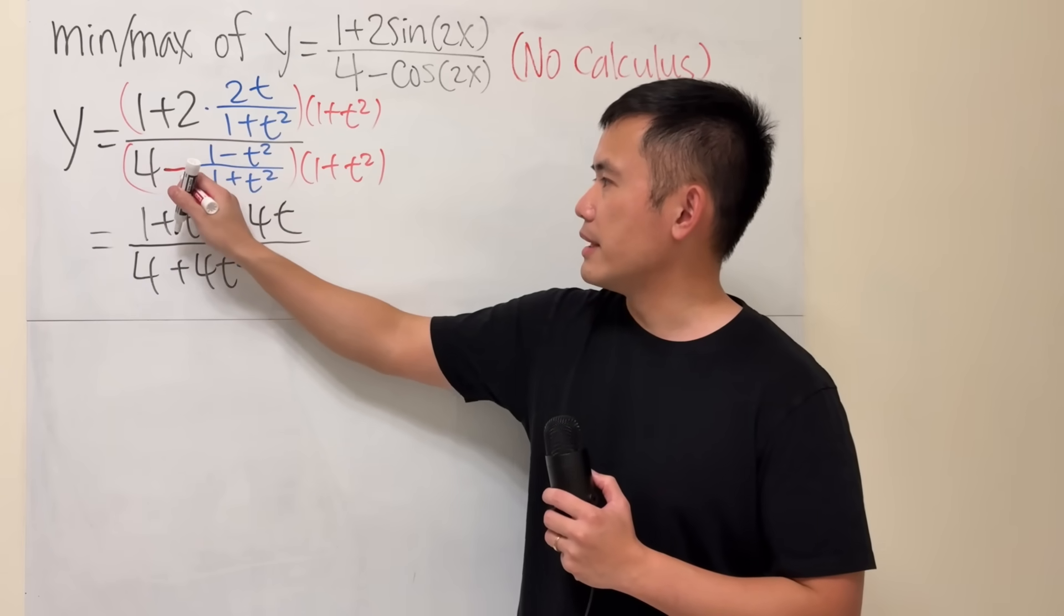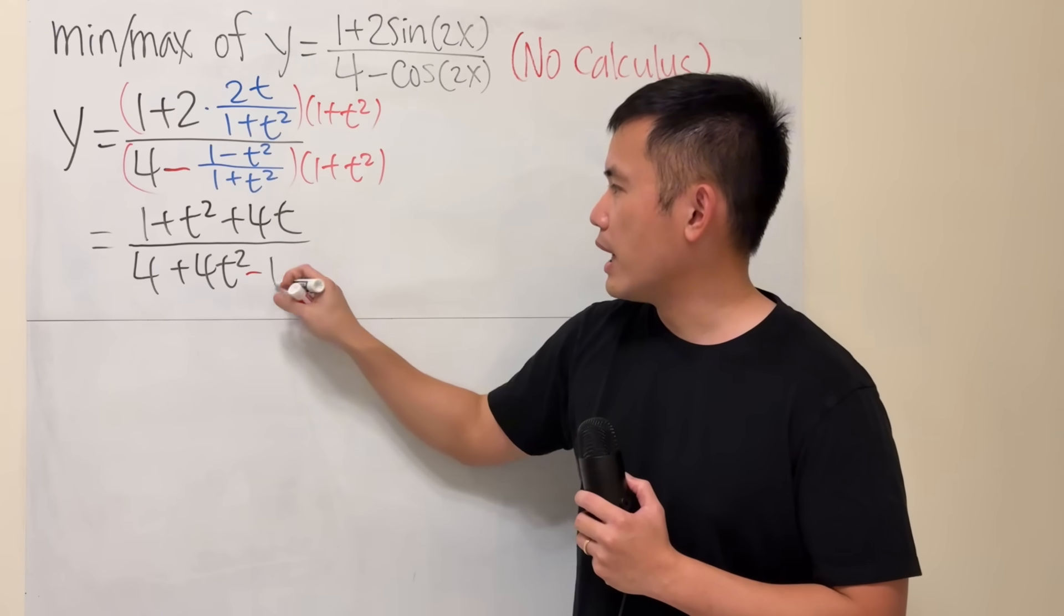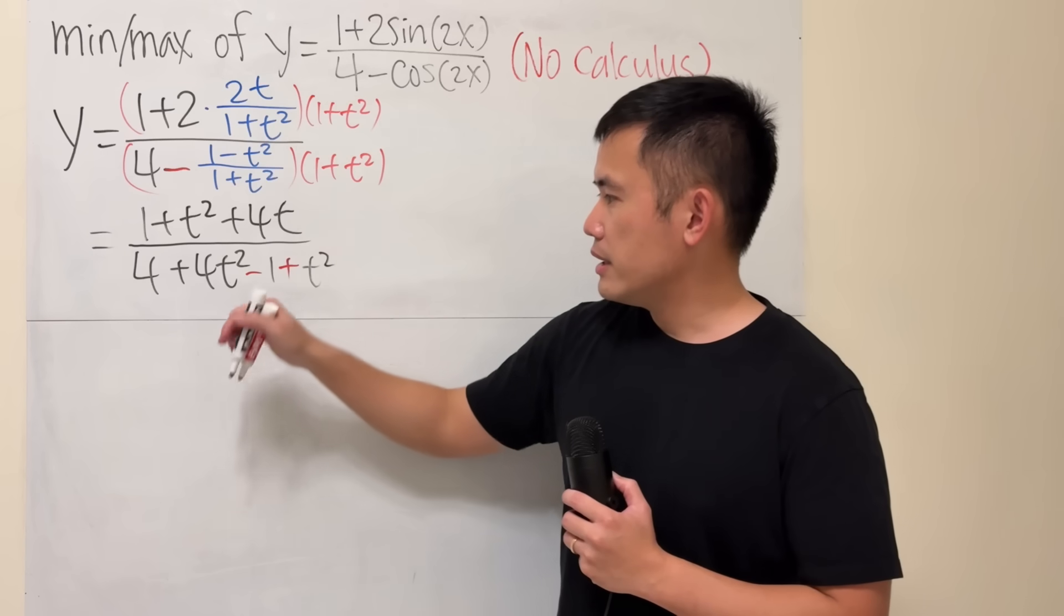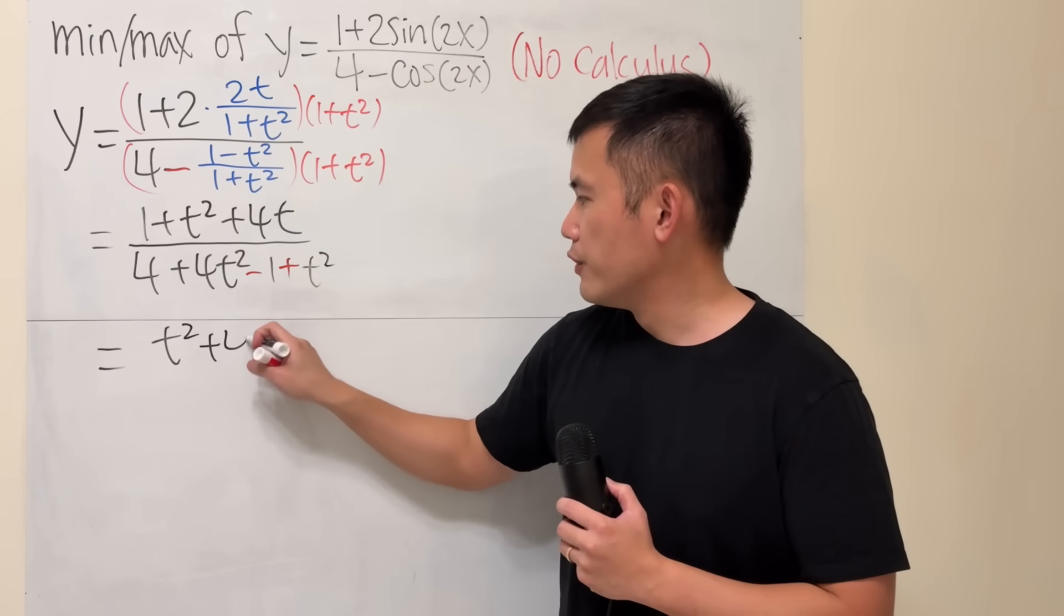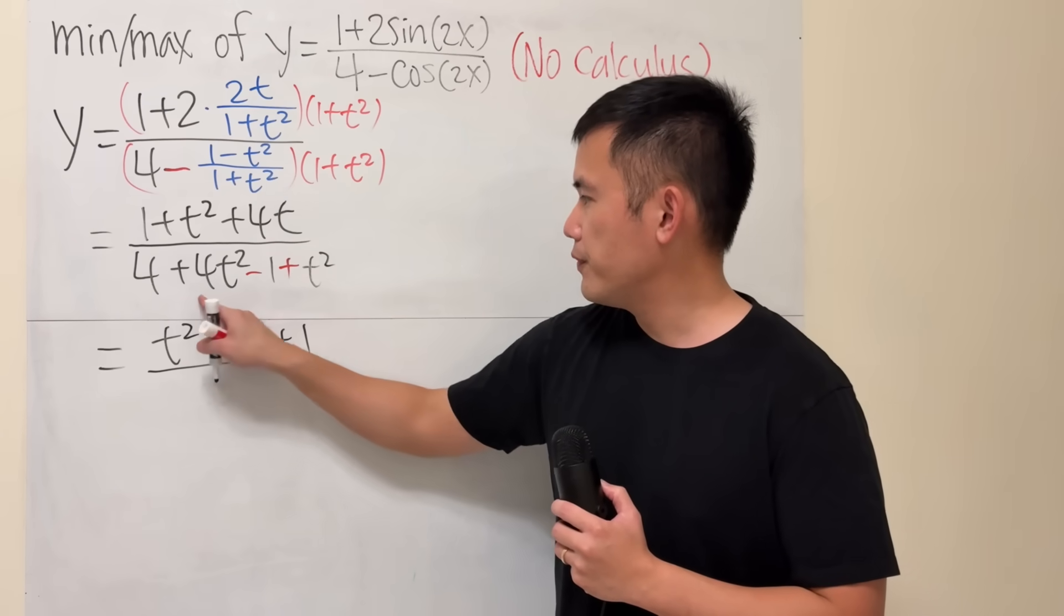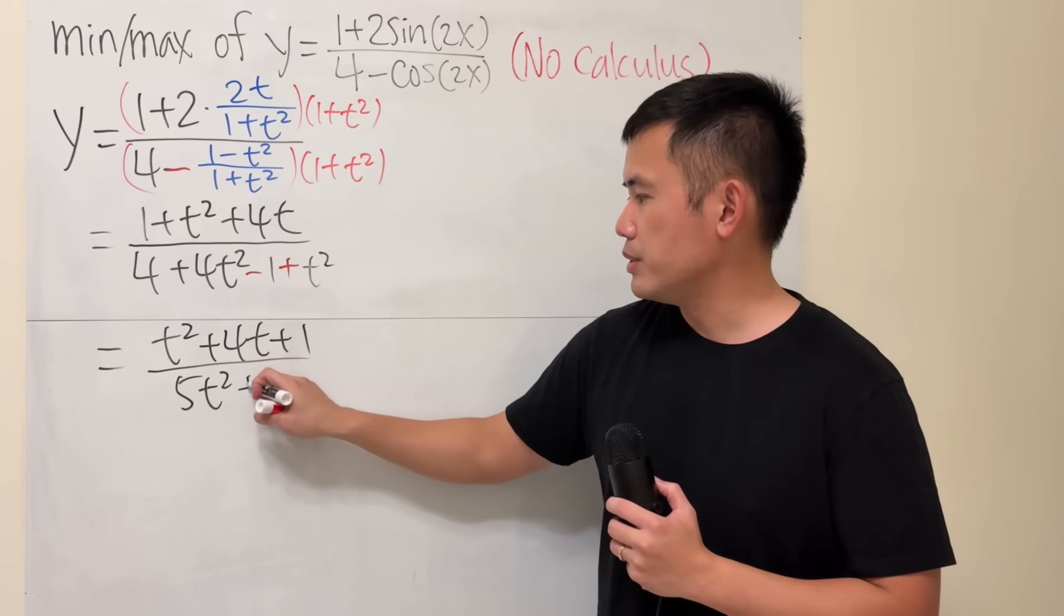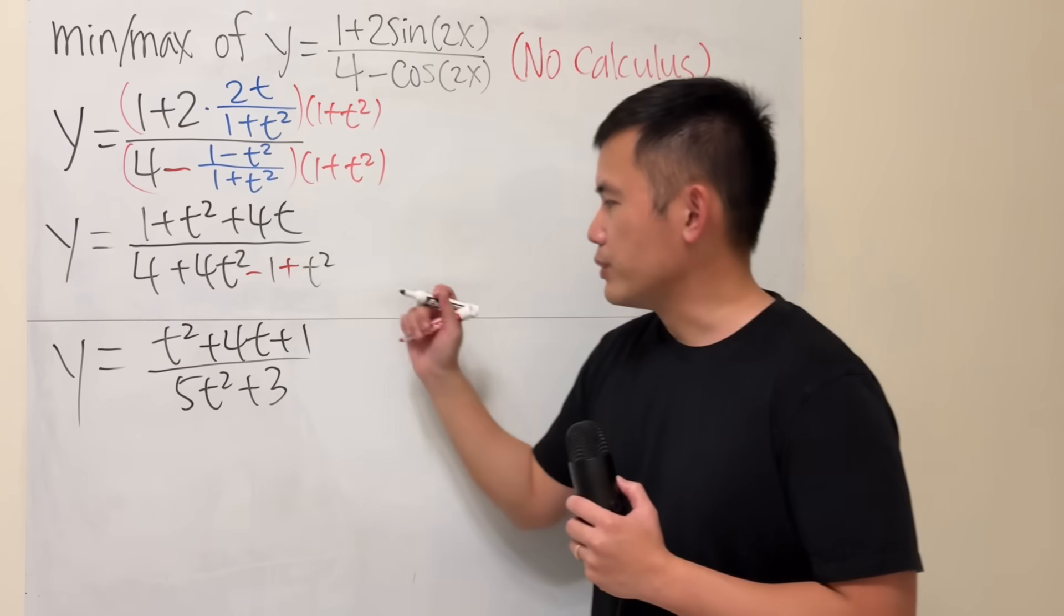But be careful. Here we have a minus. We will have to distribute. So, we get a minus 1. And then minus minus, which is a plus t squared. And then rearrange this a little bit. On the top, we have t squared plus 4t plus 1. And the bottom is 4t squared and then another t squared, 5t squared. And then that's plus 3.